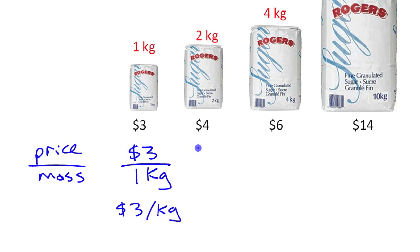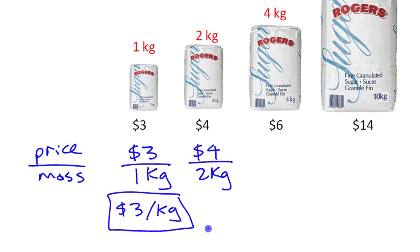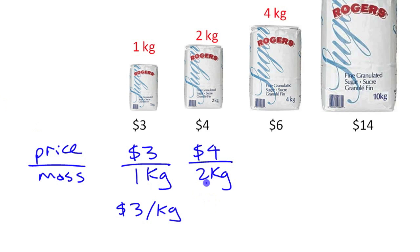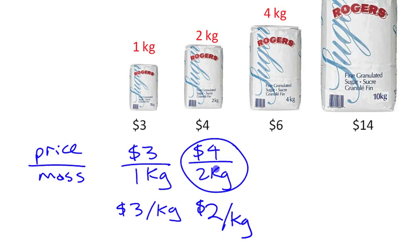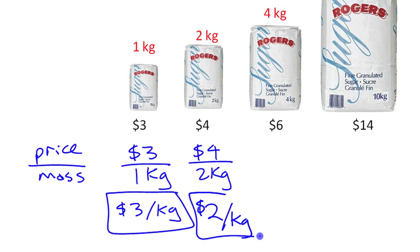The second bag is four dollars for two kilograms. We're going to write a unit rate for that as well. Four dollars for two kilograms — divide those numbers: four divided by two is two dollars per one kilogram. If you have four dollars for two kilograms, that's the same as two dollars for one kilogram. You divide the numbers and the units carry into your answer.